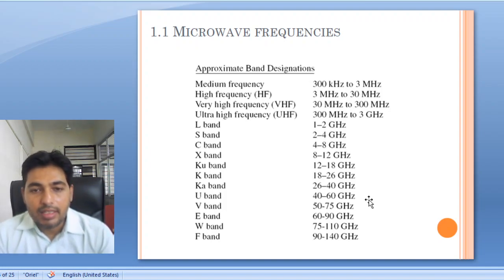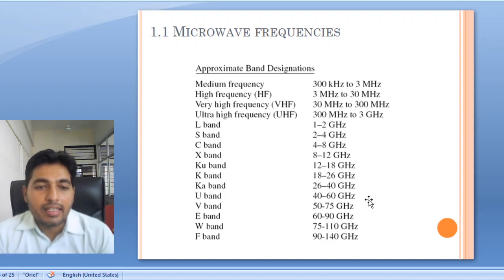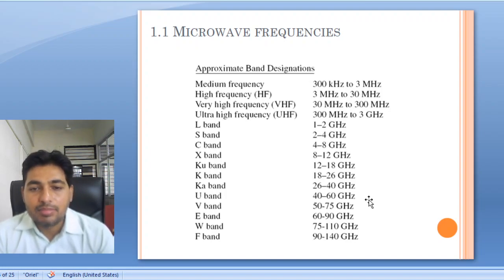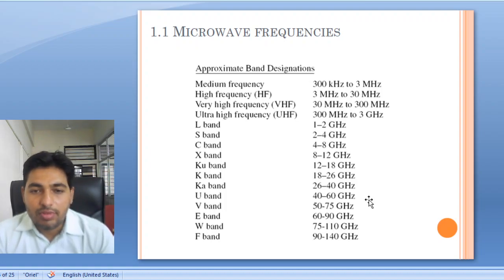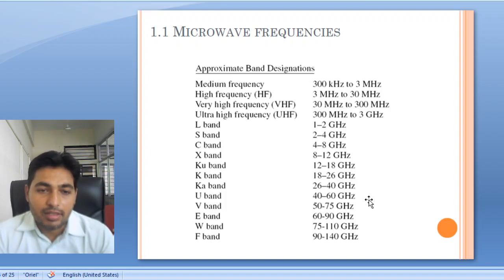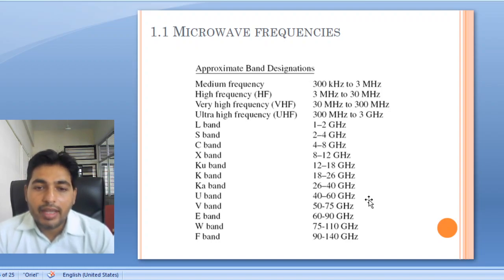The S band is from 2 to 4 GHz. Then C band — this is used largely for communication purposes in satellite communication — from 4 to 8 GHz. Then X band, from 8 to 12 GHz. All the equipment in our laboratories are in the X band because at 8 to 12 GHz the wavelength is small, so the components are small.